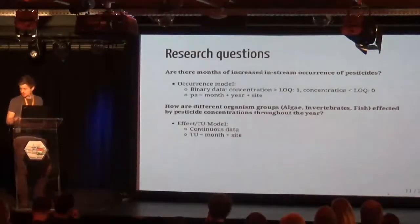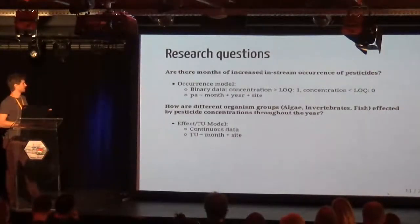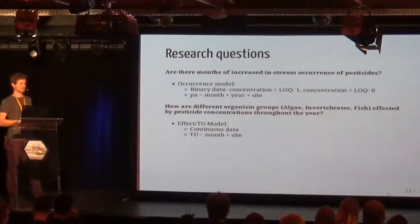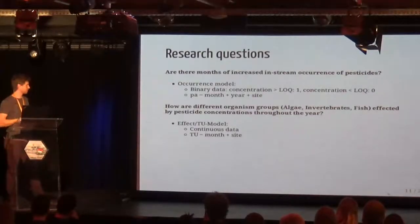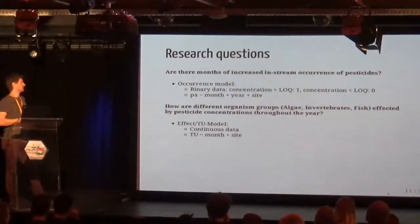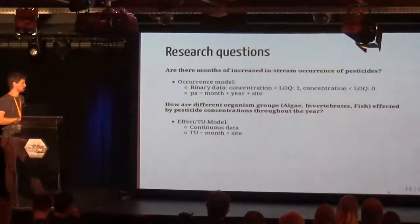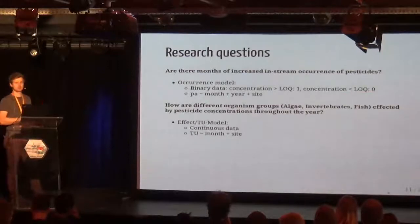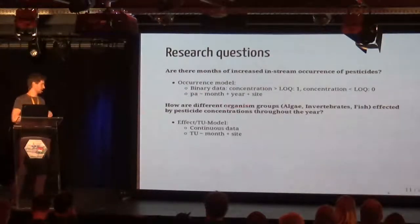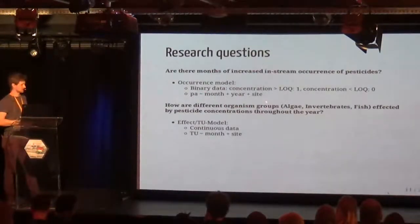From this, we had two research questions. The first was: do we have months of increased in-stream occurrence of pesticides? Do we really see an increase in spring or autumn? For this we set up a so-called occurrence model, which transforms concentrations into either a one — if they could be quantified — or a zero — if they could only be detected but not quantified. This binary response is modeled with covariates: month, year, and different sites.